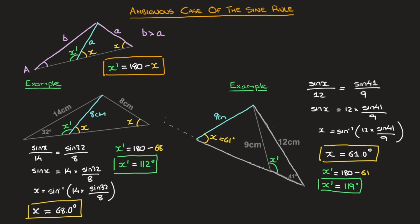We've found the two possible angles opposite the 12-centimeter side length. To summarize, the ambiguous case of the sine rule arises when looking for an unknown angle, and all the information we have is the side length opposite that angle, an acute angle, and its opposite side length — with the longest of the two side lengths being opposite the angle we're trying to find. And that's it for this tutorial.